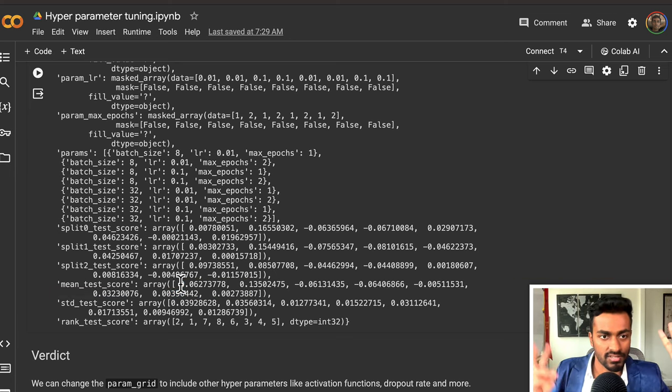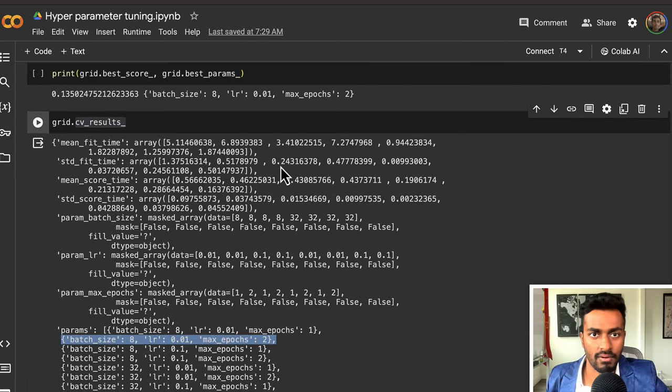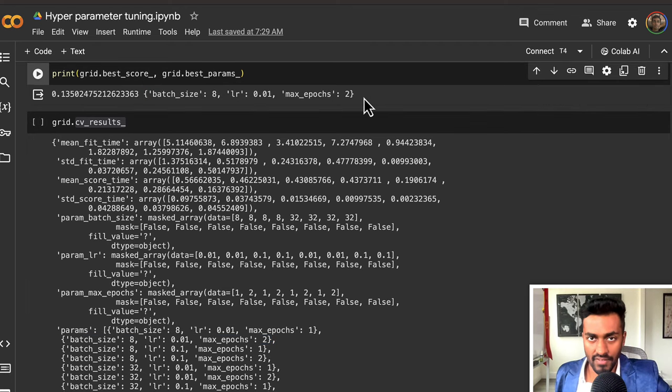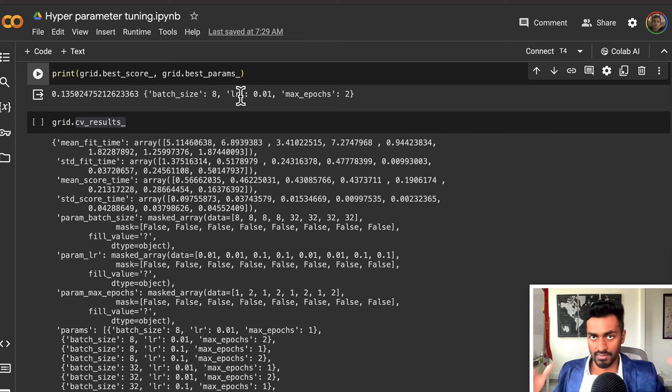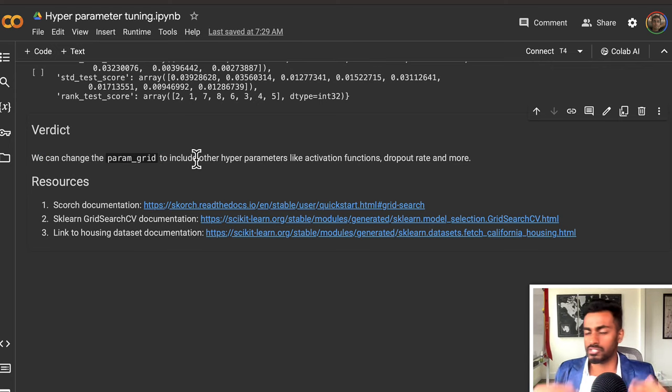This configuration of hyperparameters would be the best for this current model. We can change the paramgrid parameter to include other hyperparameters like activation functions, dropout rates, and anything in the list of hyperparameters that I mentioned before.